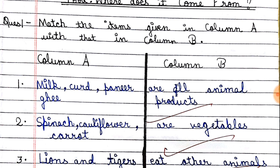The first point is milk, curd, paneer and ghee. How do we get milk? From animals — cows, buffalo. Curd, paneer and ghee are all animal products. So we have matched these with Column B as animal products.